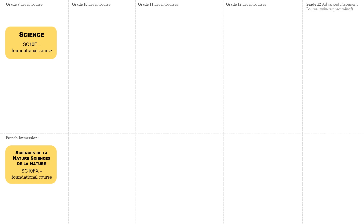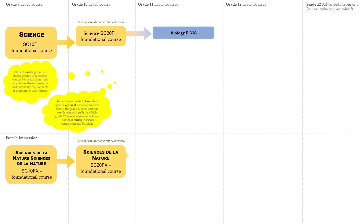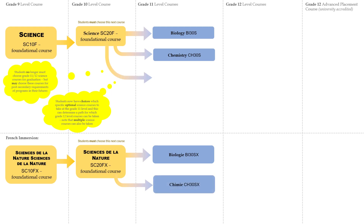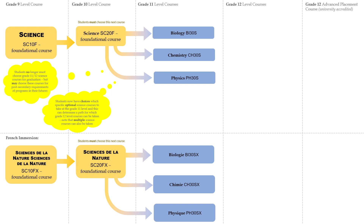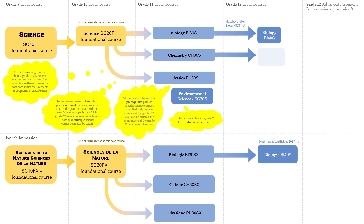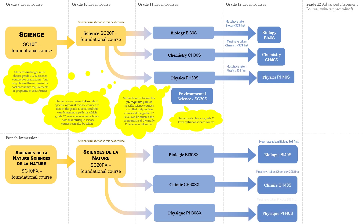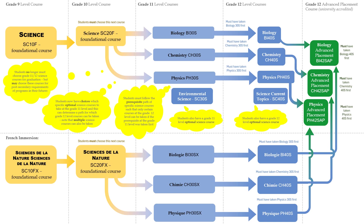Science are core subjects for graduation that start in Grade 9, then a mandatory course in Grade 10. Students no longer must choose Grade 11 and Grade 12 science courses for graduation, but may choose these courses for post-secondary requirements or their futures. Note that multiple science courses can also be taken. Grade 12 science courses are options that can be taken based on prerequisites chosen in Grade 11. Students must follow the prerequisite path of specific science courses such that only certain courses at the Grade 12 level can be taken if the prerequisite at the Grade 11 level was taken first. Students also have a Grade 12 level optional science course. Advanced Placement science courses are also an option for students in Grade 12.